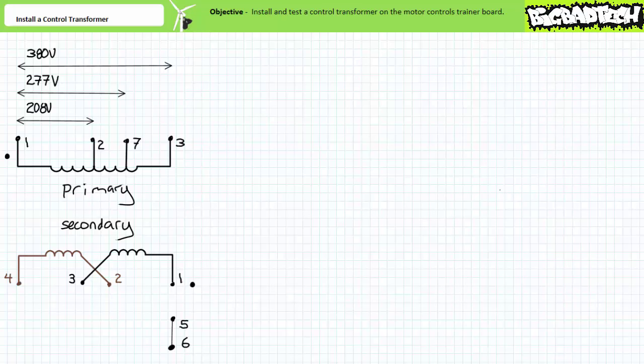Additionally, we'll install a fuse in the low voltage pilot output of the control transformer to protect against short circuits and faults in the ladder logic. Finally, we'll learn how to ground reference the pilot voltage.